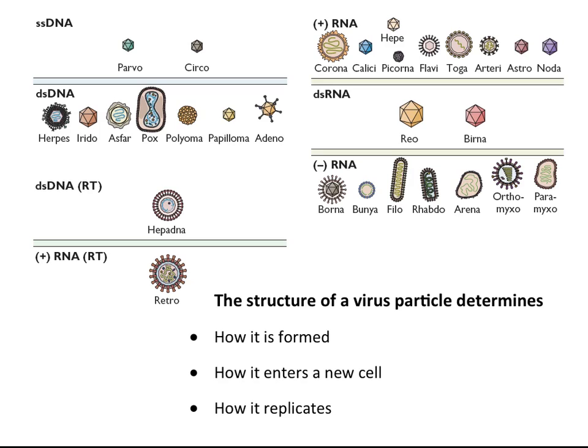Looking at all the viruses considered so far, you can group them into categories: icosahedral symmetry with or without an envelope, helical nucleocapsids (usually enveloped in animal viruses), and various combinations. By the end of today you should be able to look at any structure and say how it's formed, and from that make predictions about how it enters a cell and even how it replicates.